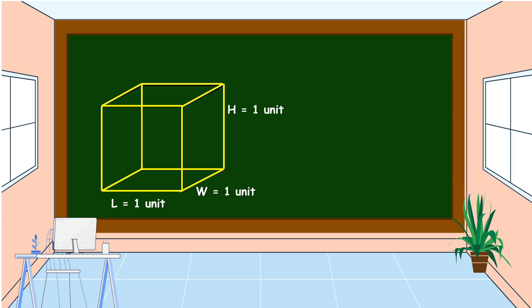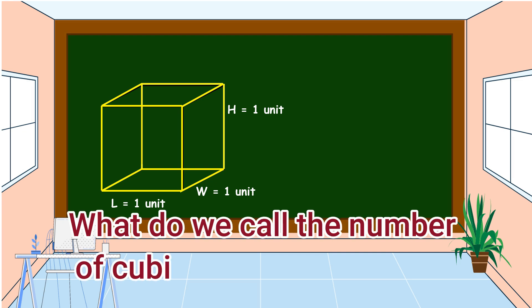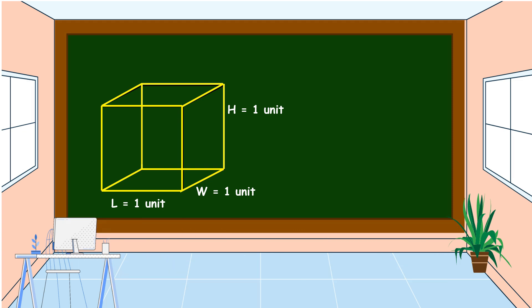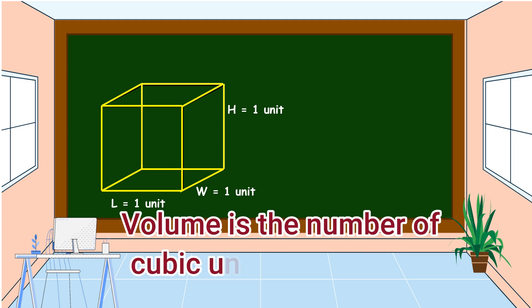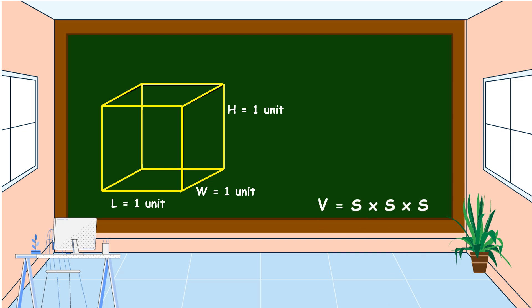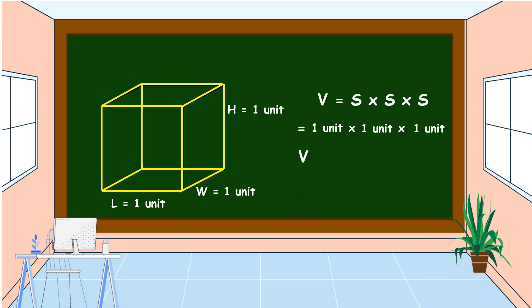All the sides of a cube are equal. What do we call the number of cubic units in an object? Yes, we call it volume. Volume is equal to side times side times side. Substituting: one unit times one unit times one unit — therefore the volume of this cube is one cubic unit.